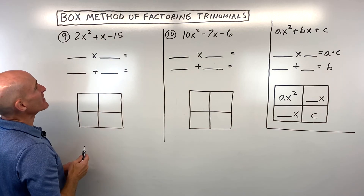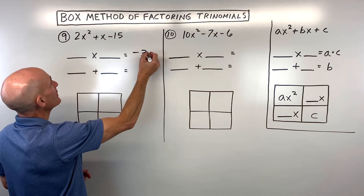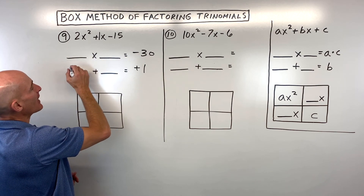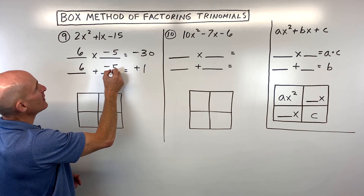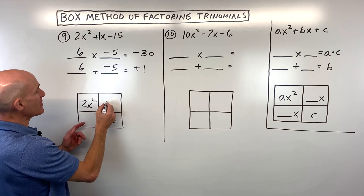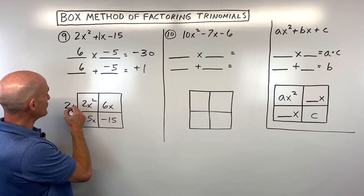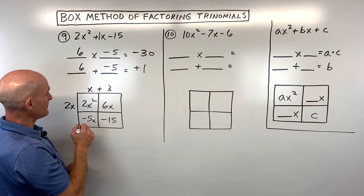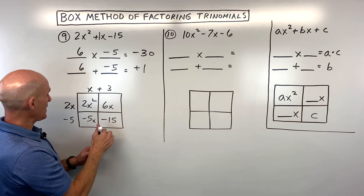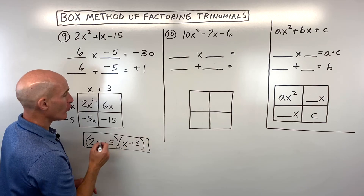For example 9: 2x squared plus x minus 15. Using the AC method: 2 times negative 15 is negative 30, and those numbers have to add to the middle coefficient, understood to be positive 1. Two numbers that multiply to negative 30 and add to 1: that's 6 and negative 5. Put the first term in the upper left, constant in the lower right, then 6x and negative 5x. Looking horizontally, factor out 2x, leaving x plus 3; then factor out negative 5 from the bottom — giving negative 5x and negative 15. Our two factors are 2x minus 5 and x plus 3.